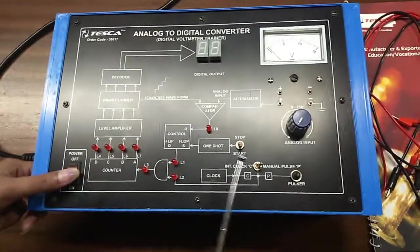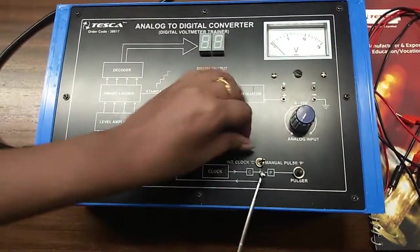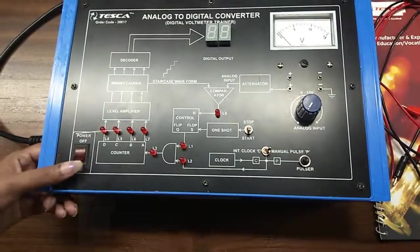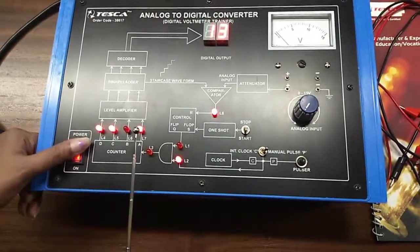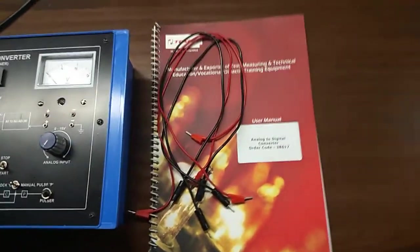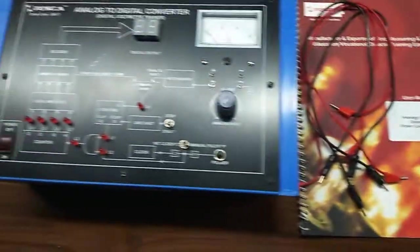This switch is to stop or start. This is the manual pulsar and this is the main switch to turn on or off the gate. This is the user manual and patch cords, all included in this kit.